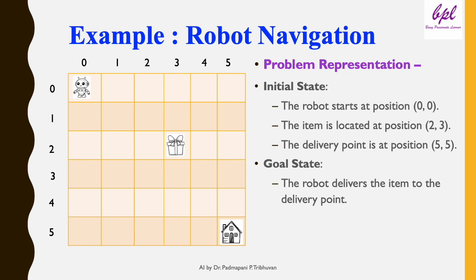Let's consider a robot navigating in an environment to pick up an item and deliver it to a specific location. This is a classic problem in AI. Now let's represent the planning problem. As we have discussed previously, an AI planning problem is defined by three main elements: initial state, goal state, and the set of actions available.